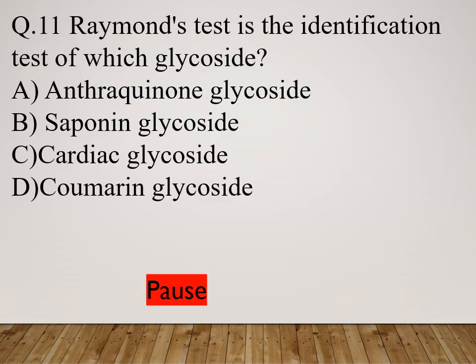Question 11: Raymond test is the identification test of which glycoside? Option A: Anthraquinone glycoside. Option B: Saponin glycoside. Option C: Cardiac glycoside. Option D: Coumarin glycoside.